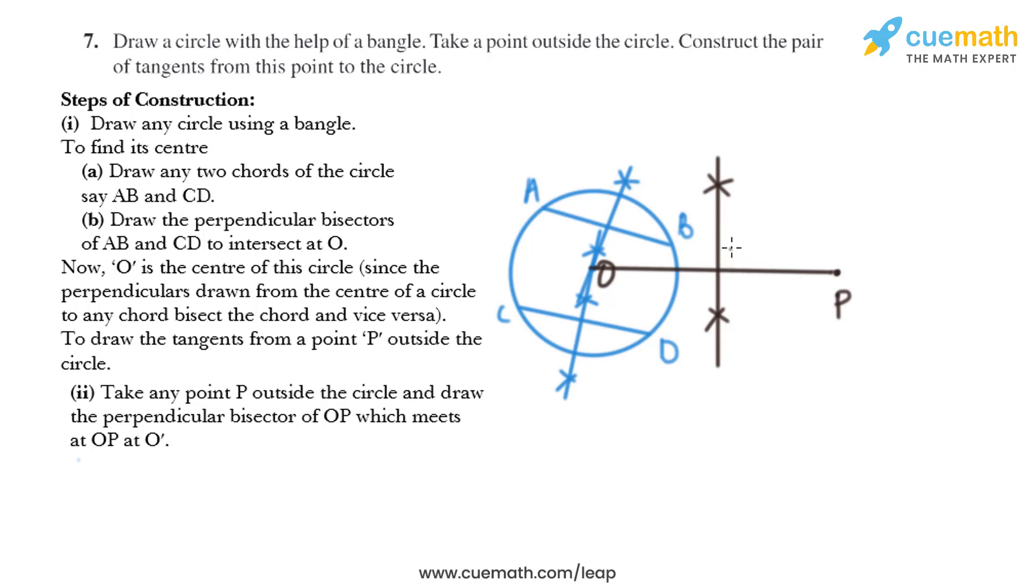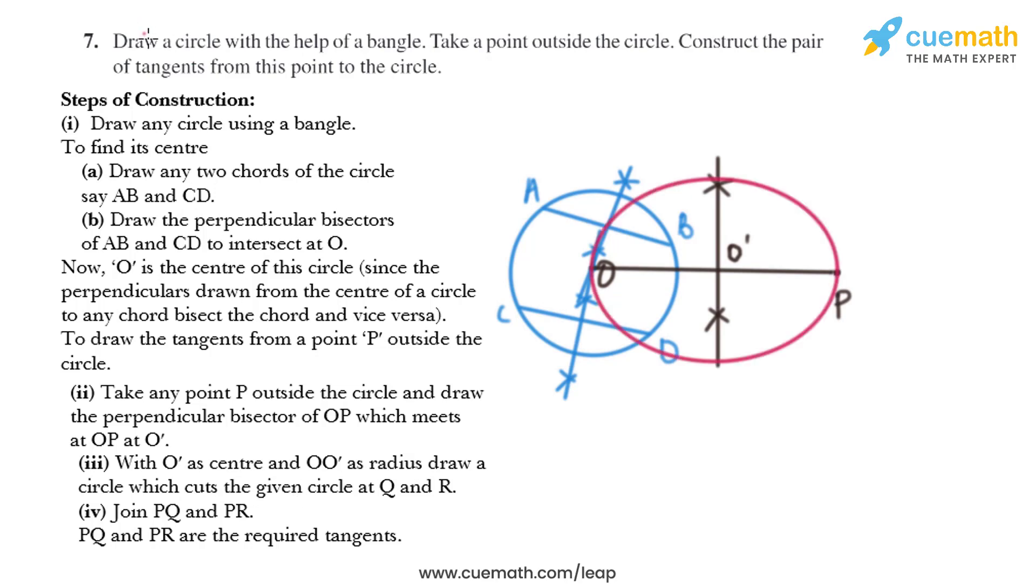This line intersects OP at O'. Now in the next step, with O' as center and OO' as radius, draw a circle which cuts the given circle at Q and R. So we'll draw a circle with radius OO' and we'll mark the point of intersection as Q and R.